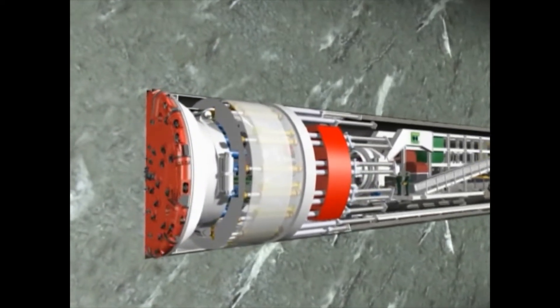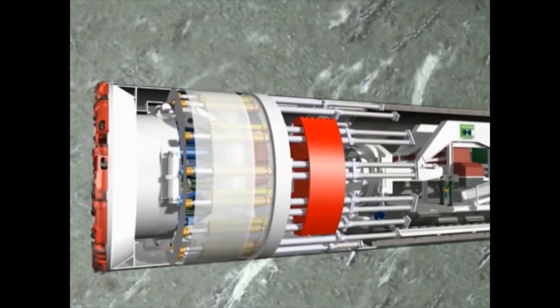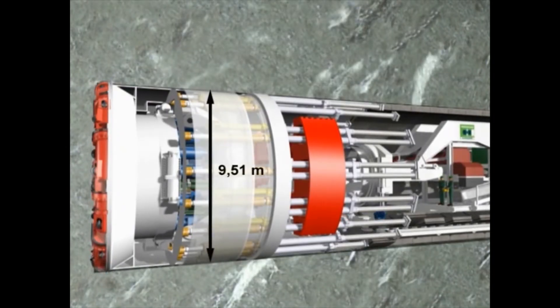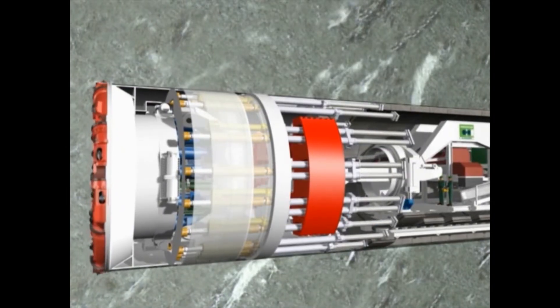The overall system of the double-shield TBM in Guadarrama has a diameter of 9.51 meters and a length of approximately 250 meters.